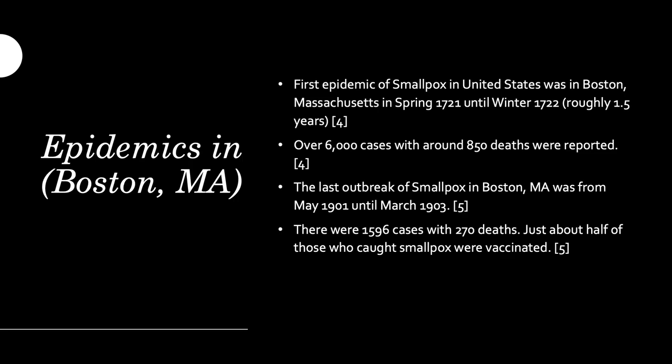The second outbreak in Boston ran from May of 1901 to March of 1903 — roughly the same time frame as the first epidemic. The key difference was that by the second epidemic, we had a vaccine for smallpox. Because of that, there were significantly fewer cases and deaths: only 1,596 cases and 270 deaths. Of those cases, half of the individuals had been vaccinated.